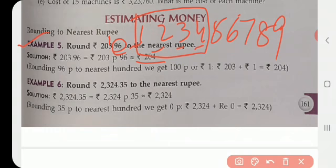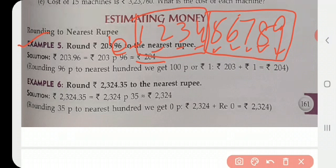But in the next group, that is 5, 6, 7, 8, and 9, if these are the last numbers of a particular number, then obviously we have to add 1 to the previous number and get the answer, right?